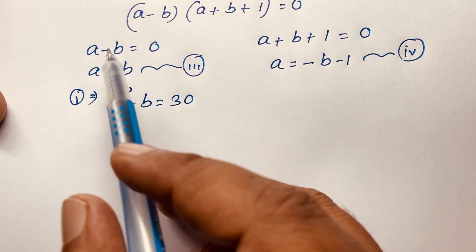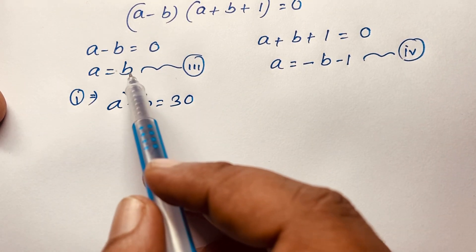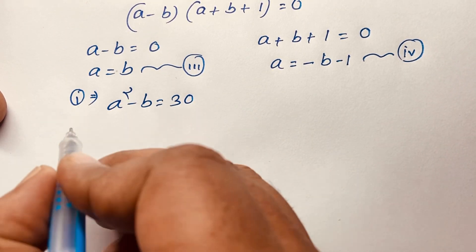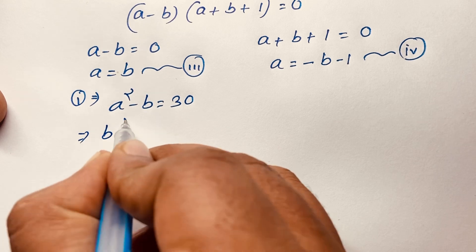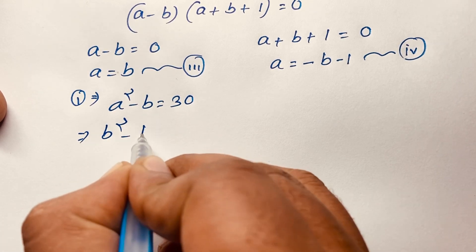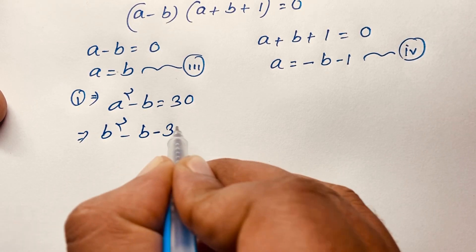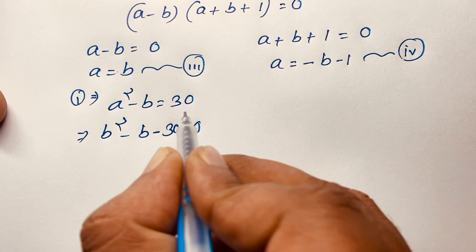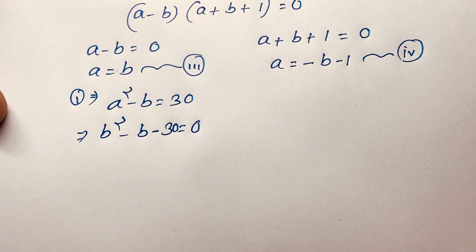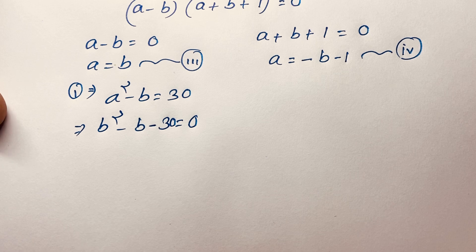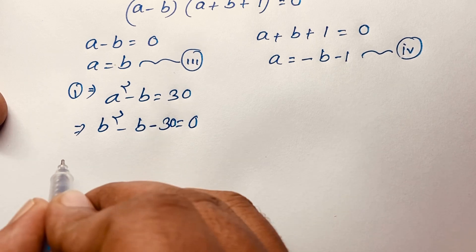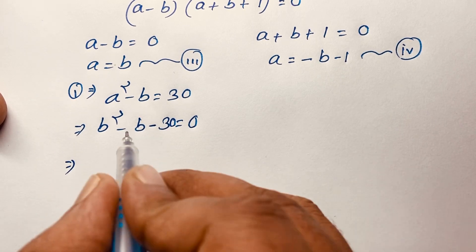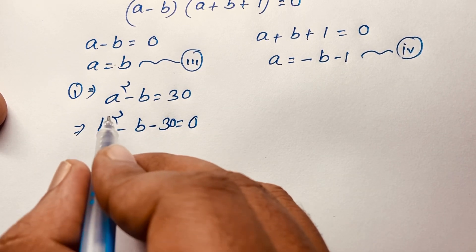I put in the value A is equal to B. So I can say it will be B squared minus B minus 30 is equal to 0. I just move positive 30 to this side, making it negative 30. Now here factorization is possible. Here is the middle term: I take 6B and 5B.